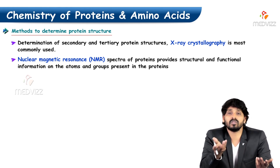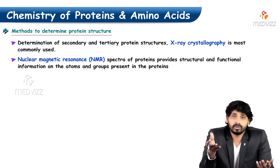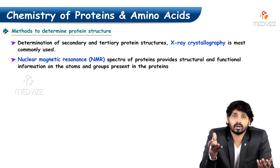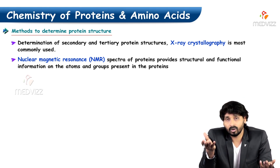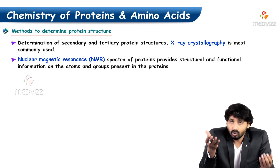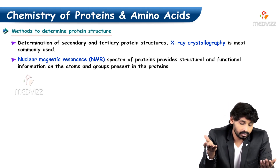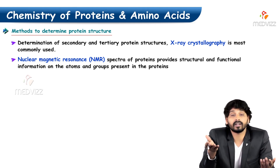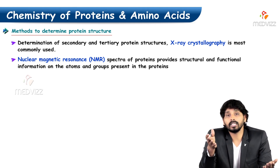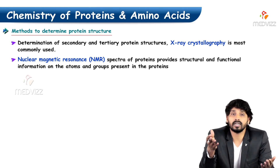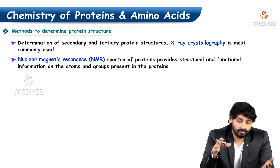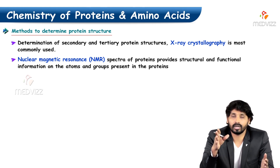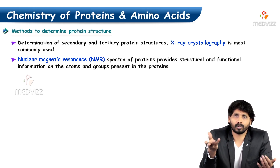Nowadays in the news we are seeing that most honey producers in the Indian market are adulterating honey with maple syrup. To identify this adulteration, there is a test called nuclear magnetic resonance. If any honey passes this NMR test, that honey is considered pure. This is the main test for checking the purity of honey.